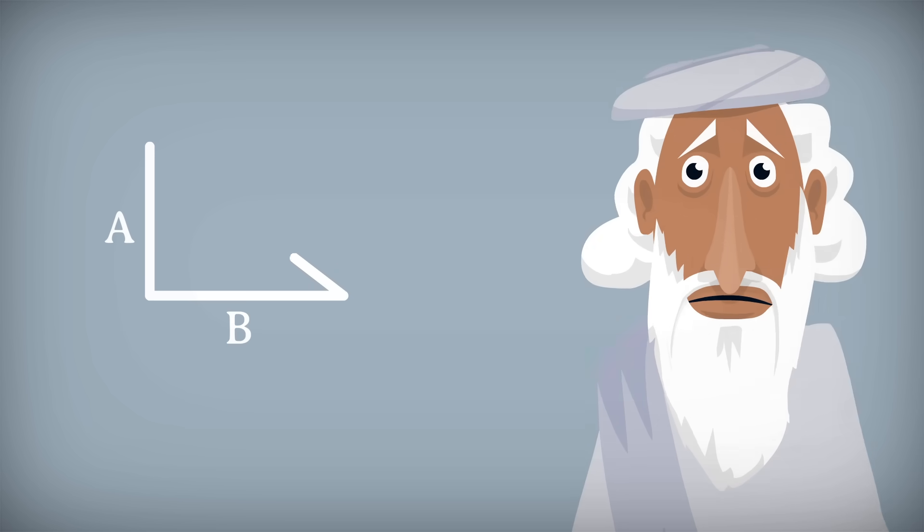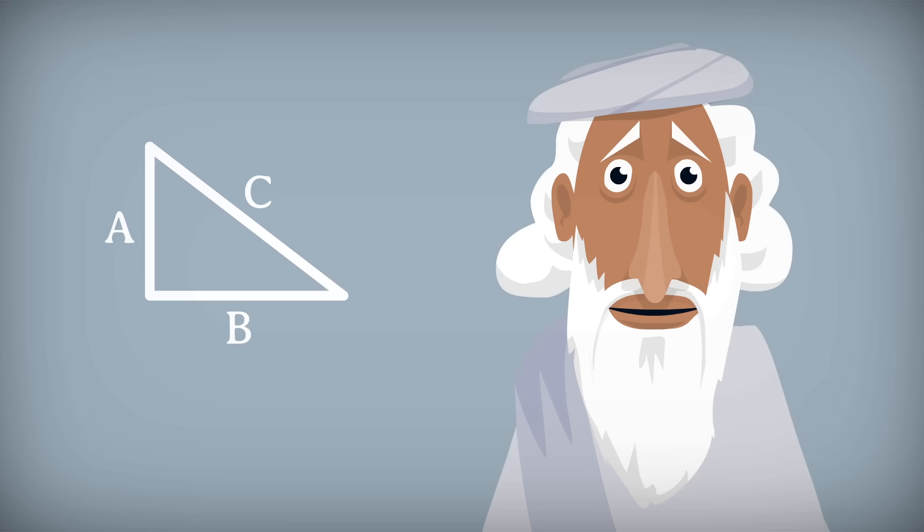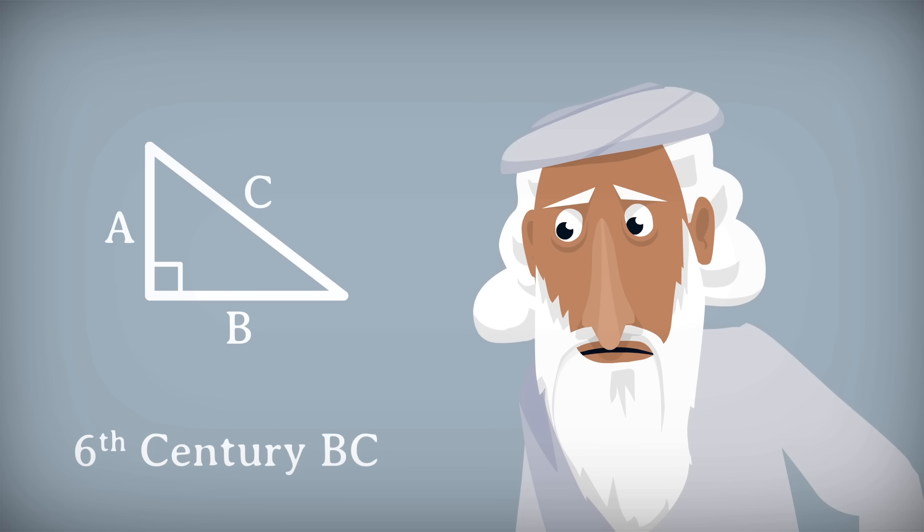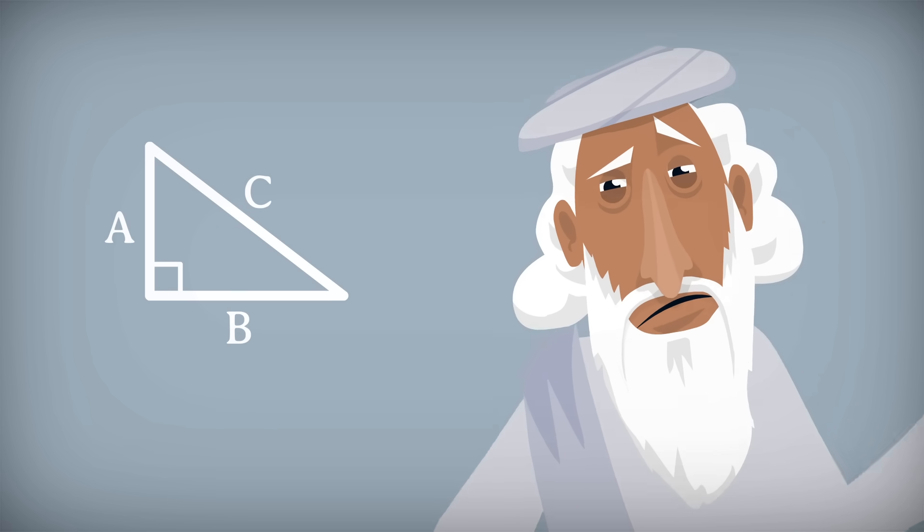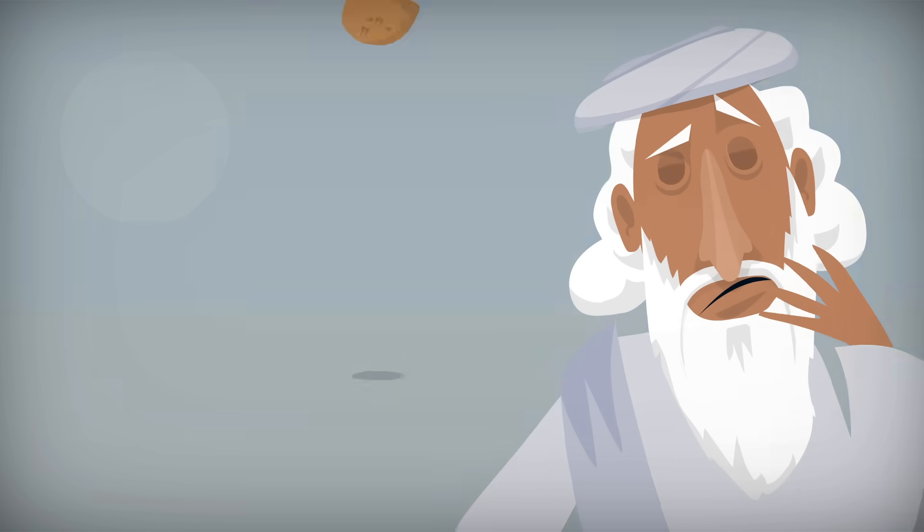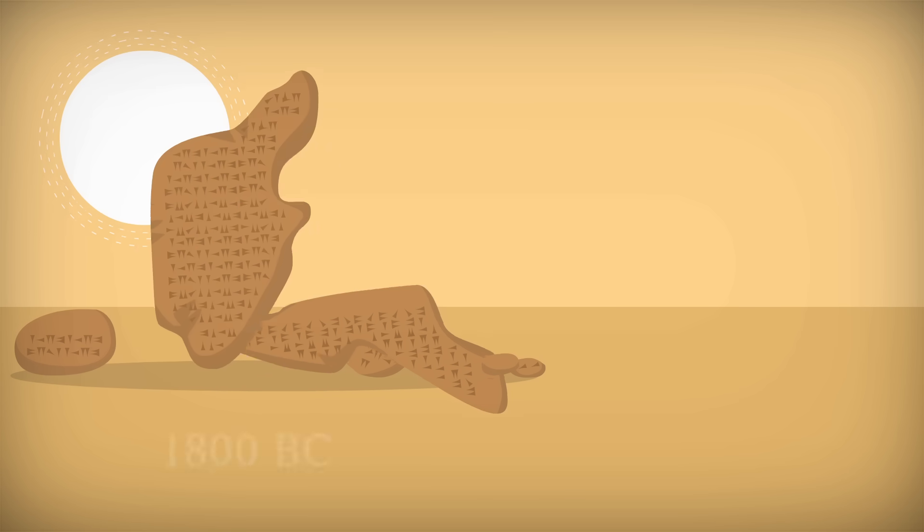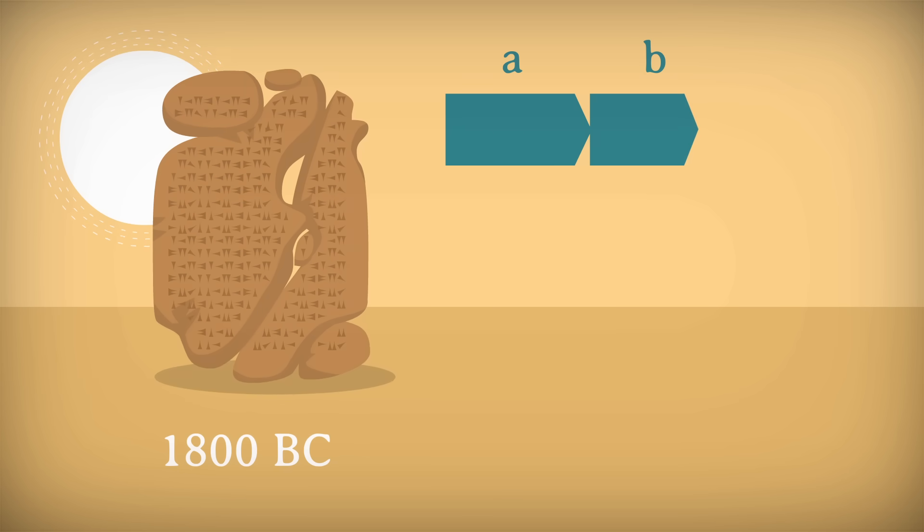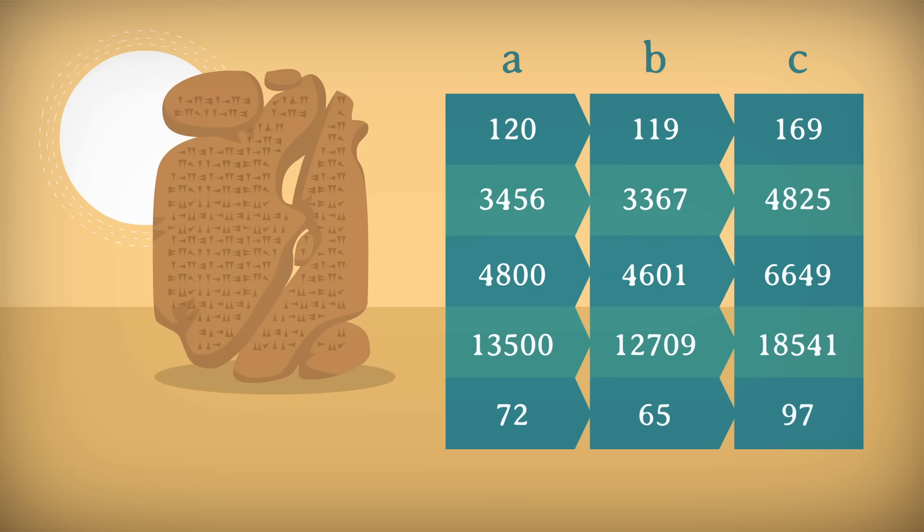The theorem is named for Pythagoras, a Greek philosopher and mathematician in the 6th century BC, but it was known more than a thousand years earlier. A Babylonian tablet from around 1800 BC lists fifteen sets of numbers that satisfy the theorem.